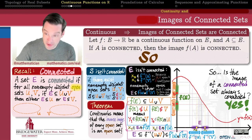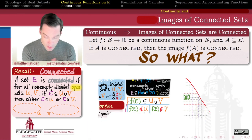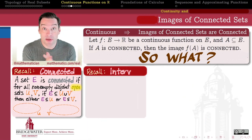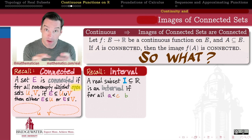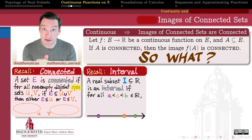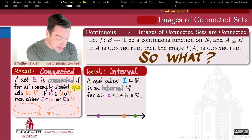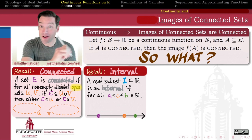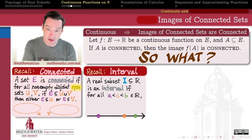The forward image of a connected set is connected under a continuous function. We should care because of the other thing that we know about connected sets — something very particular to the topology of the real number line. We had a definition when we were first introduced to connected sets of what it means for a subset of the real numbers to be called an interval. Those are the sets that also have that 'no gaps' property.